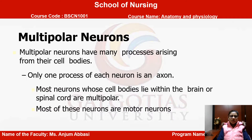The third type is multipolar neurons. Multipolar neurons have many processes arising from their cell body, but only one process of each neuron is an axon. Most neurons whose cell bodies lie within the brain or spinal cord are multipolar — keep that in mind. Most of these neurons are motor neurons.